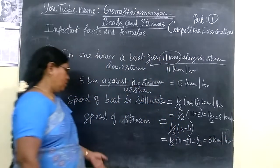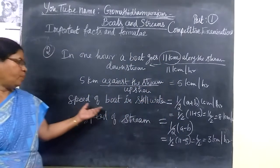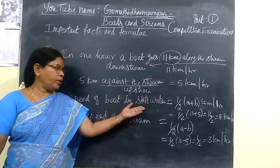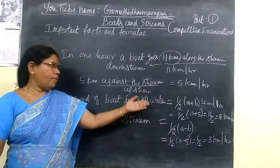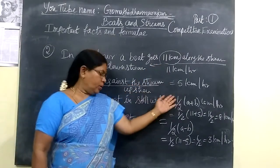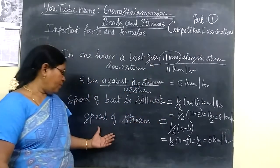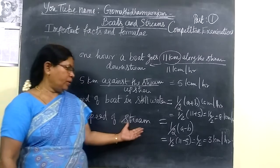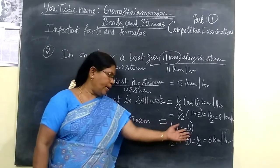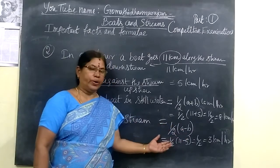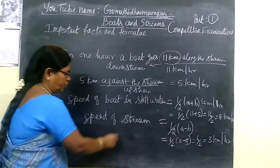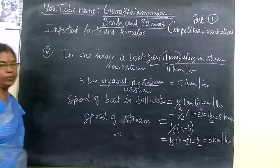So the speed of the boat in still water is the average of these two values, dividing by 2. Thank you.